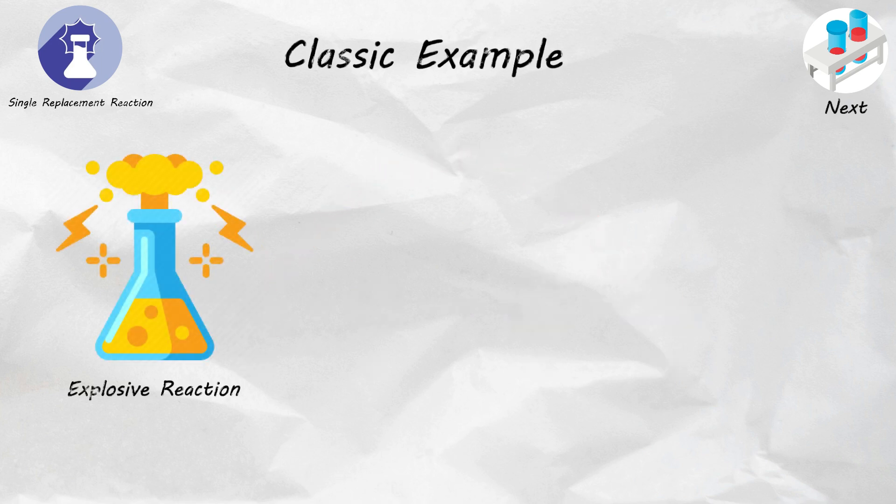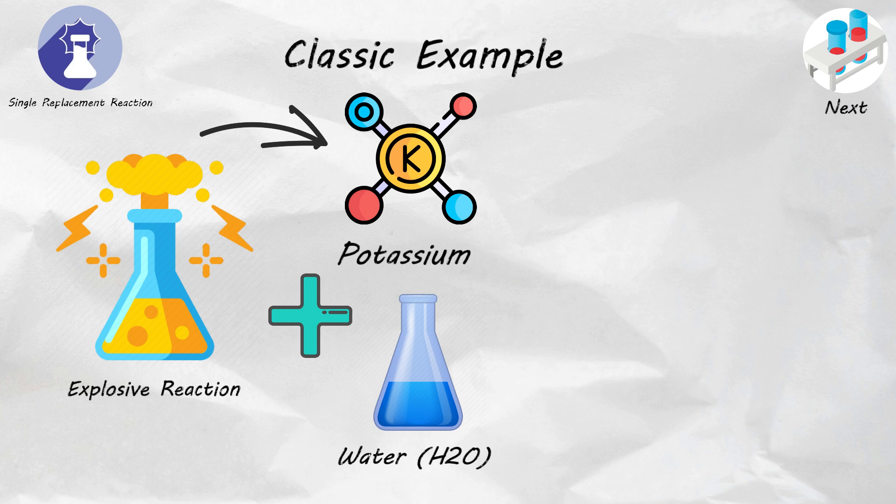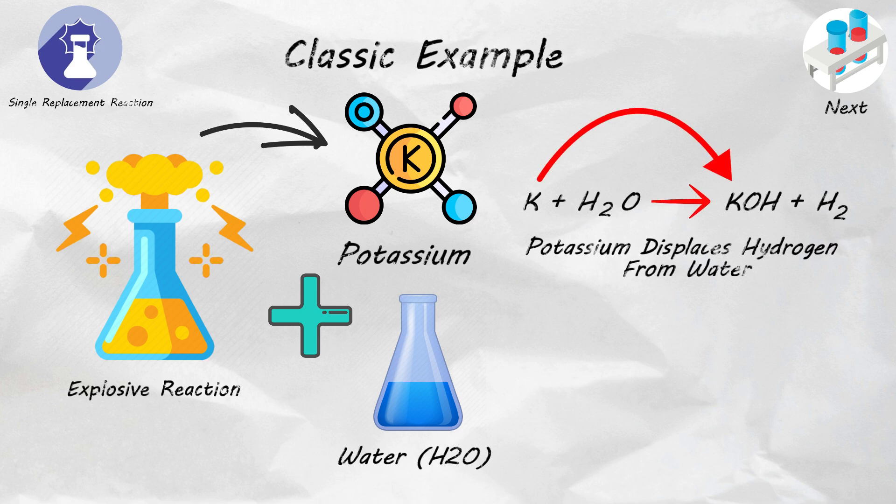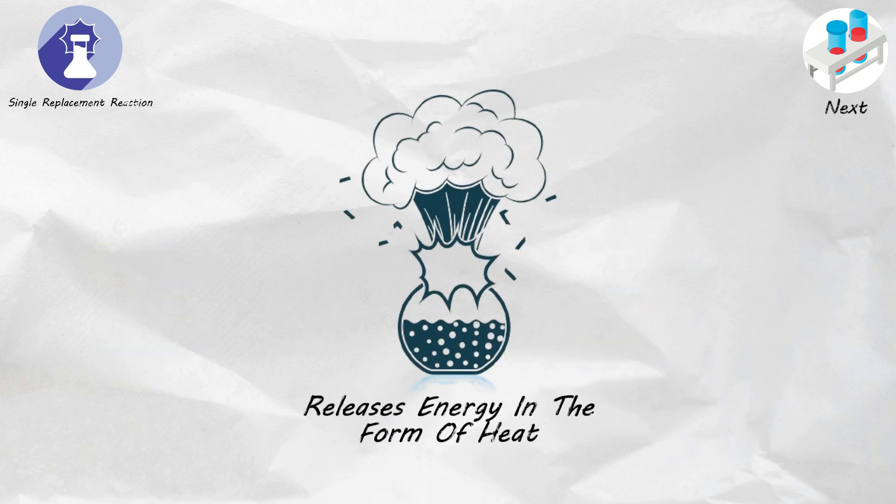A classic example is the explosive reaction when potassium, K, encounters water, H2O. In this reaction, potassium displaces hydrogen from water, resulting in the formation of hydrogen gas and potassium hydroxide, KOH, a solid dissolved in the water. The reaction releases energy in the form of heat, making it exothermic.